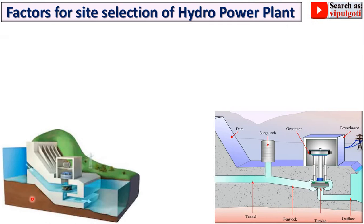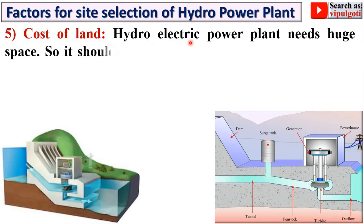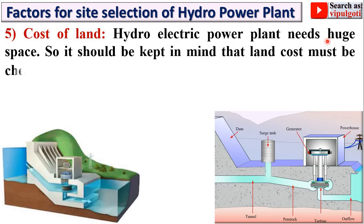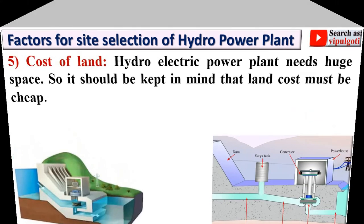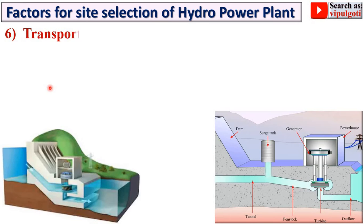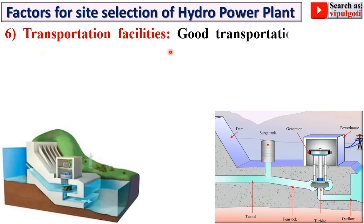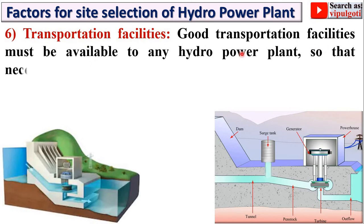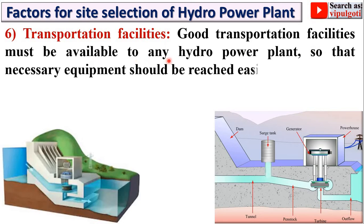The next point is cost of land. A hydroelectric power plant needs huge space, so it should be kept in mind that the land cost must be cheap, which will reduce the overall cost of the plant. Next is transportation facilities. Good transportation facilities must be available to any hydropower plant so that necessary equipment can be delivered easily during construction.